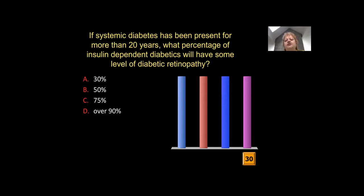The key question was: based on a 20-year history of diabetes, what percentage will have retinopathy? The answers ranged from 40% saying 30% will, 20% of you saying 50%, 20% saying 75%, and 20% saying over 90%. We'll learn the answer to that during the course of the discussion.